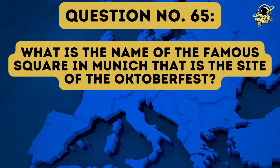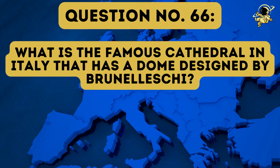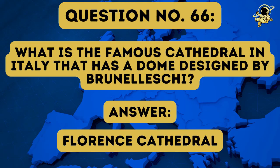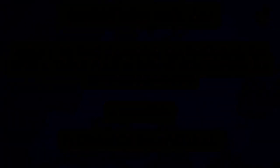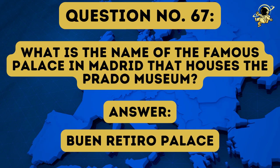Question number sixty-five: What is the name of the famous square in Munich that is the site of the Oktoberfest? And the answer to question number sixty-five is the Marienplatz. Question number sixty-six: What is the famous cathedral in Italy that has a dome designed by Brunelleschi? And the answer to question number sixty-six is the Florence Cathedral, or the Duomo. Question number sixty-seven: What is the name of the famous palace in Madrid that houses the Prado Museum? And the answer to question number sixty-seven is the Buen Retiro Palace.